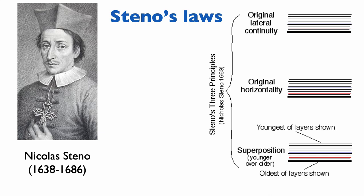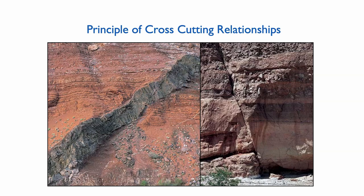These are the three principles from Nicola Steno, but they are not the only laws of stratigraphy. Another important law is the principle of cross-cutting relationships. This principle states that something that cross-cuts a fabric must be younger than that fabric. For example, a dike and a fold must both be younger than the host rock that contains them.